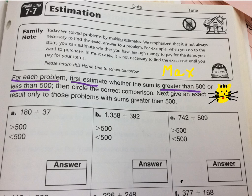And the next part, give an exact result only to those problems with sums greater than 500. So that means if the sum is less than 500, you don't have to do the rest of the addition.